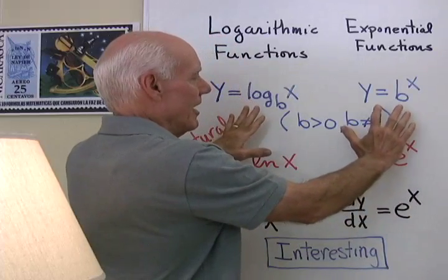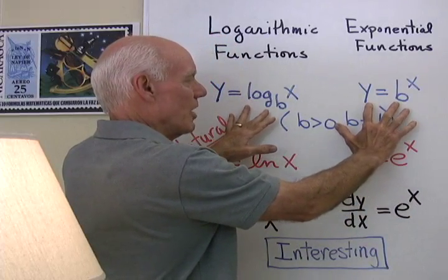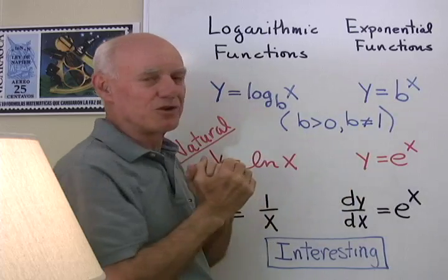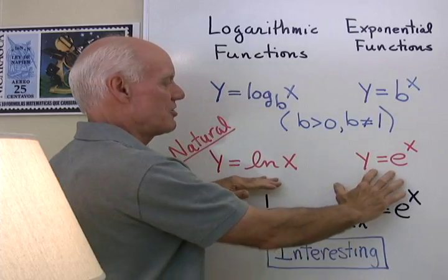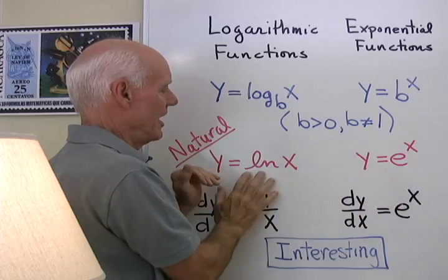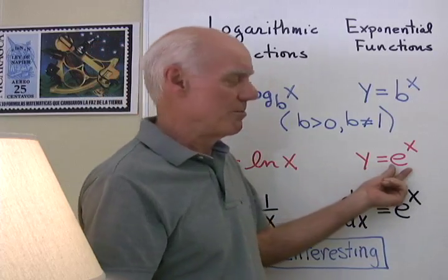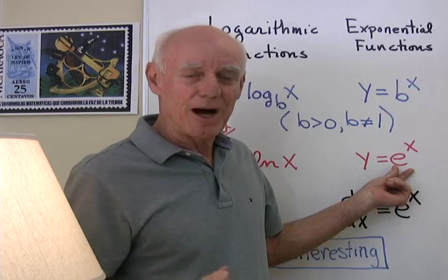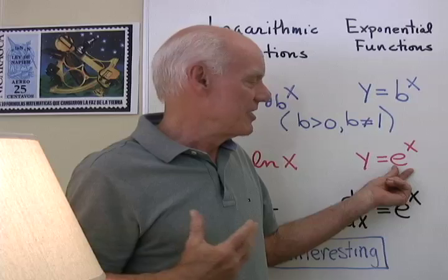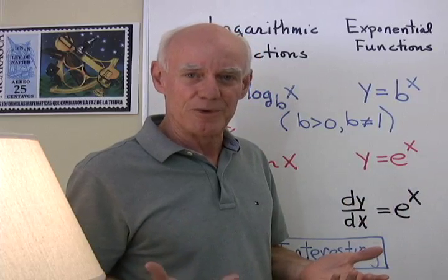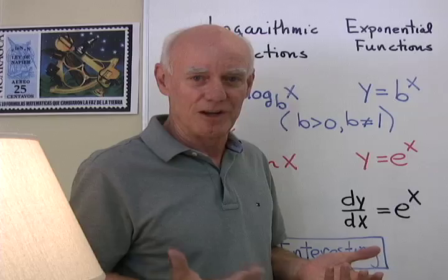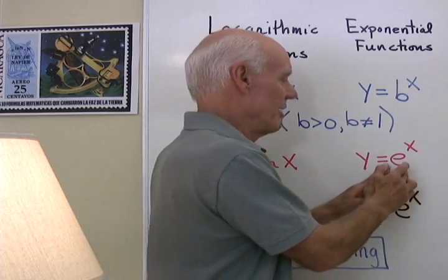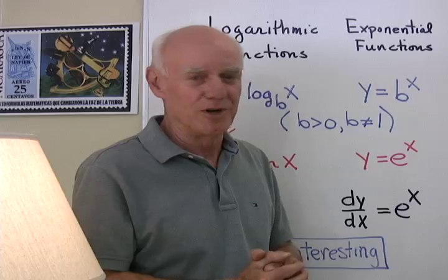Now of interest to us is going to be two specific exponential and logarithmic functions, the natural exponential function and natural logarithmic function where the base here is e. Now e is a number like pi, it's an irrational number. Its definition actually involves a limit, so we'll see how we can use our limit ideas in the actual definition for this irrational number e.